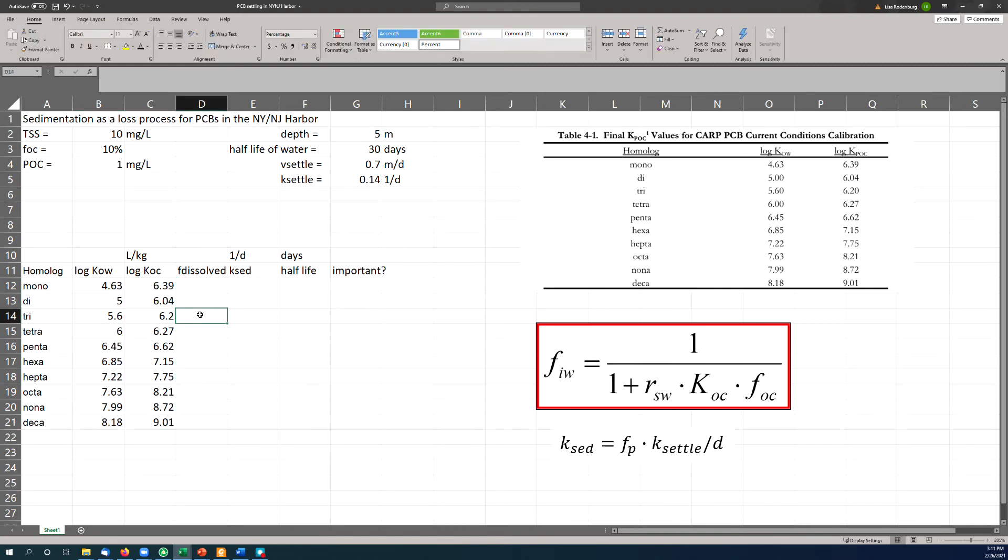So we want to calculate the rate at which these chemicals are removed from the water column via settling and the half-life. And then we want to ask whether they're important in a system where the half-life of the water is 30 days. And so the total suspended solids in the harbor is about 10 milligrams per liter, so that's your R_SW right here. The fraction of organic carbon on these is 10% or 0.1, so that's your F_OC. And we have K_OC right here. So we have everything we need to calculate the fraction of the chemical that's dissolved. So let's do that.